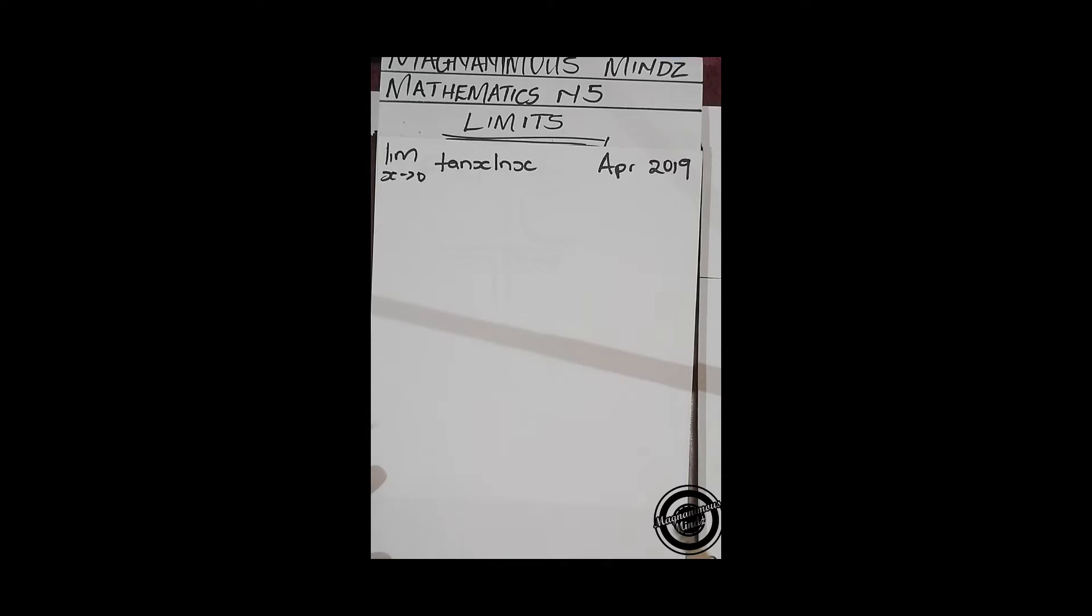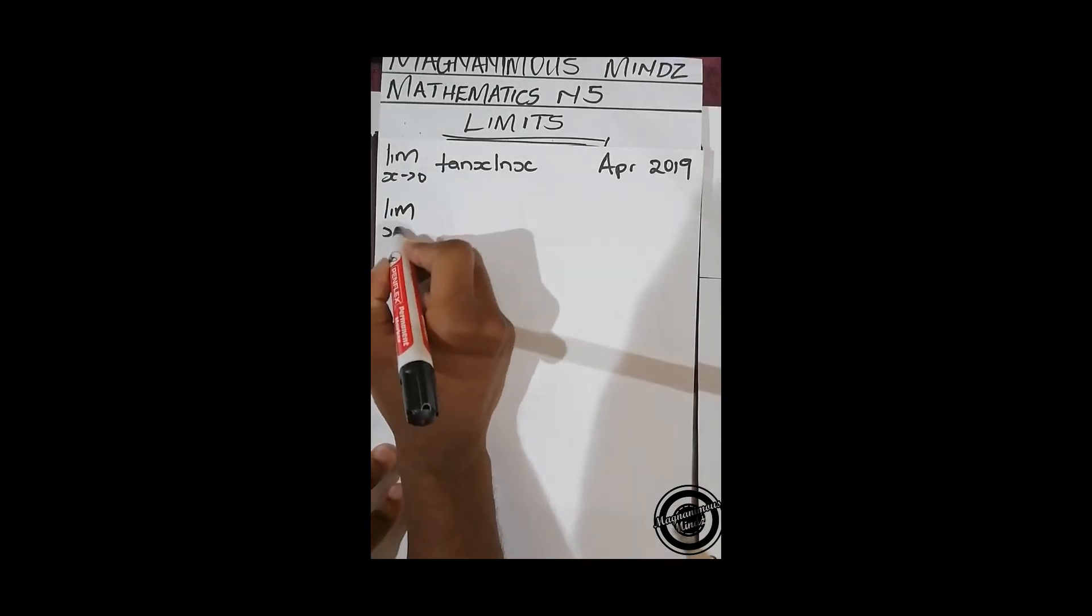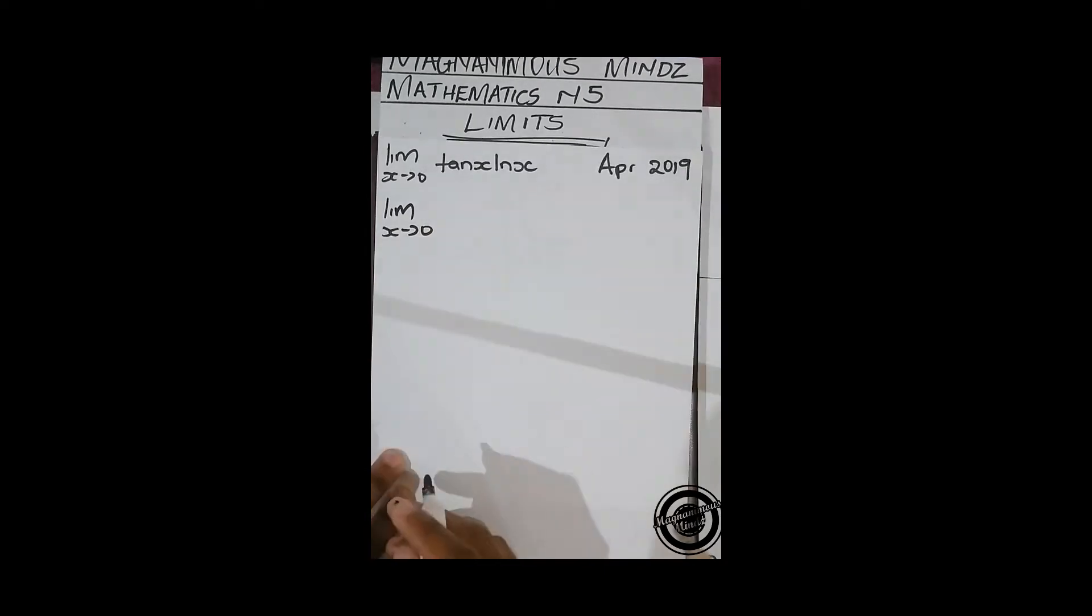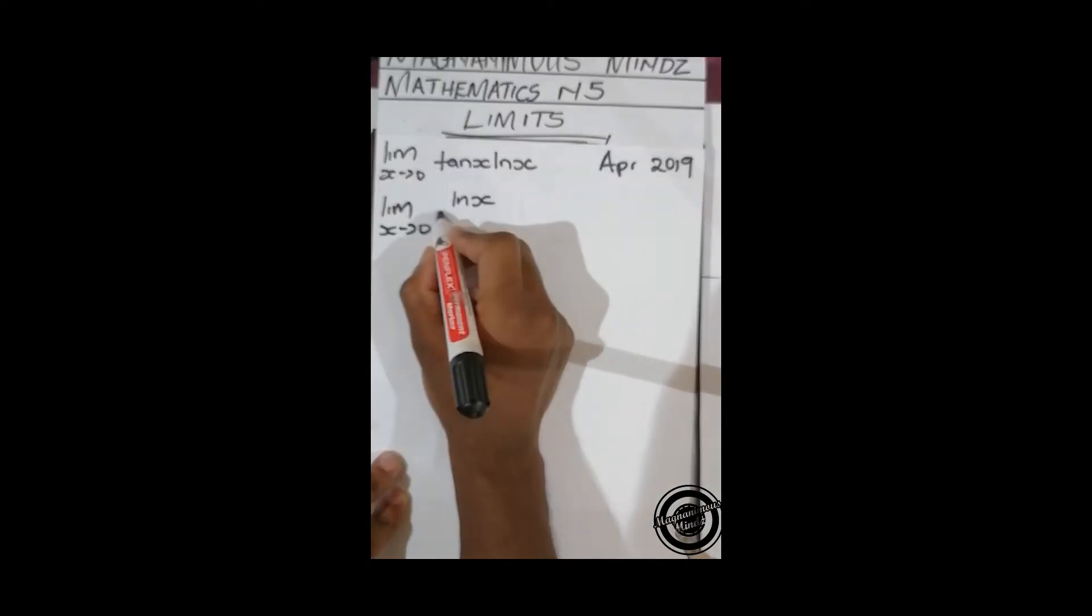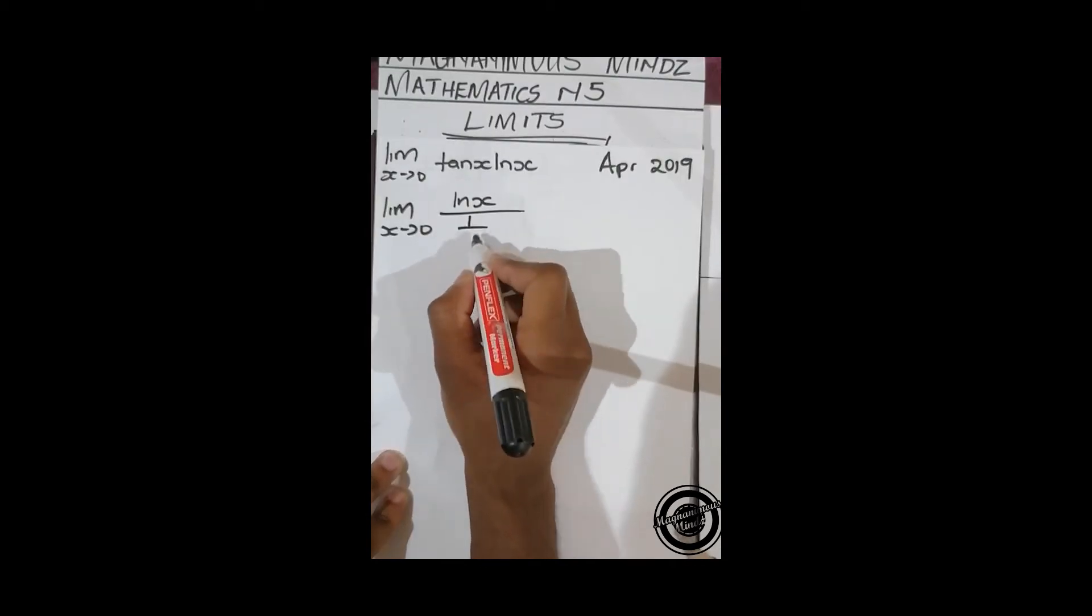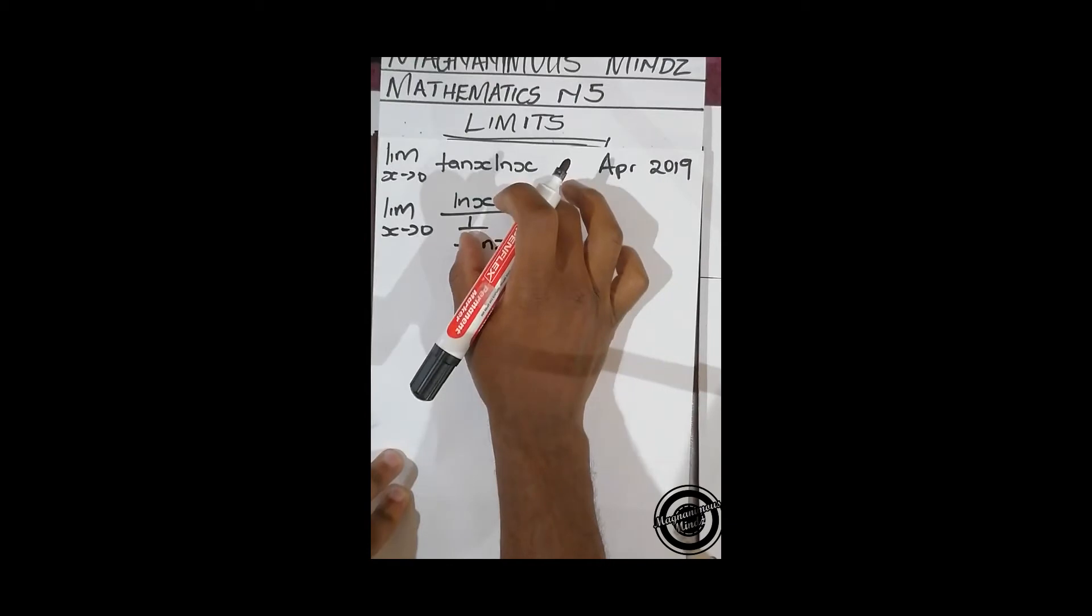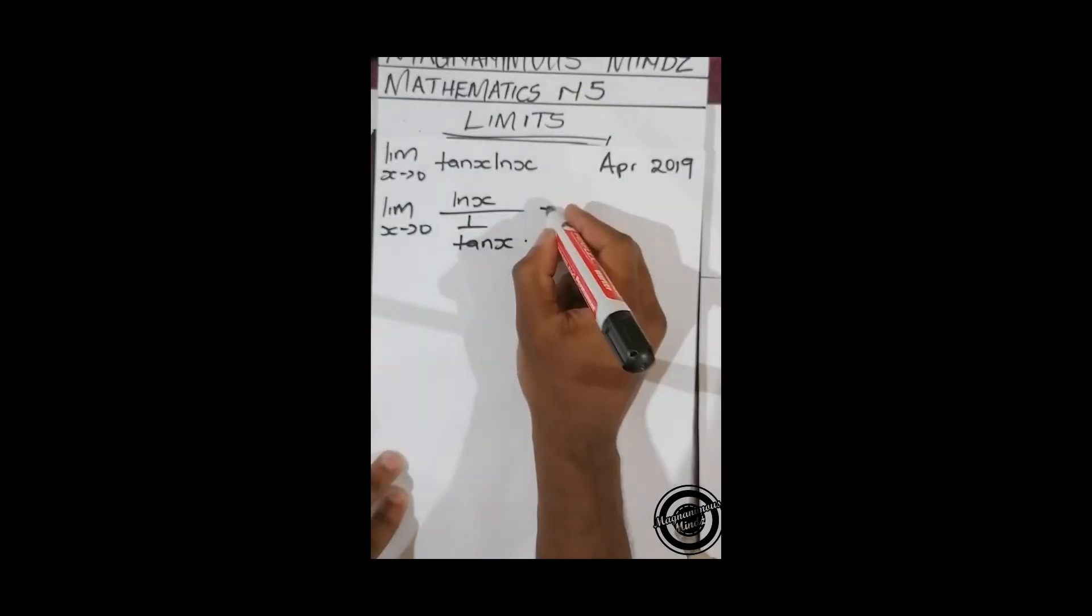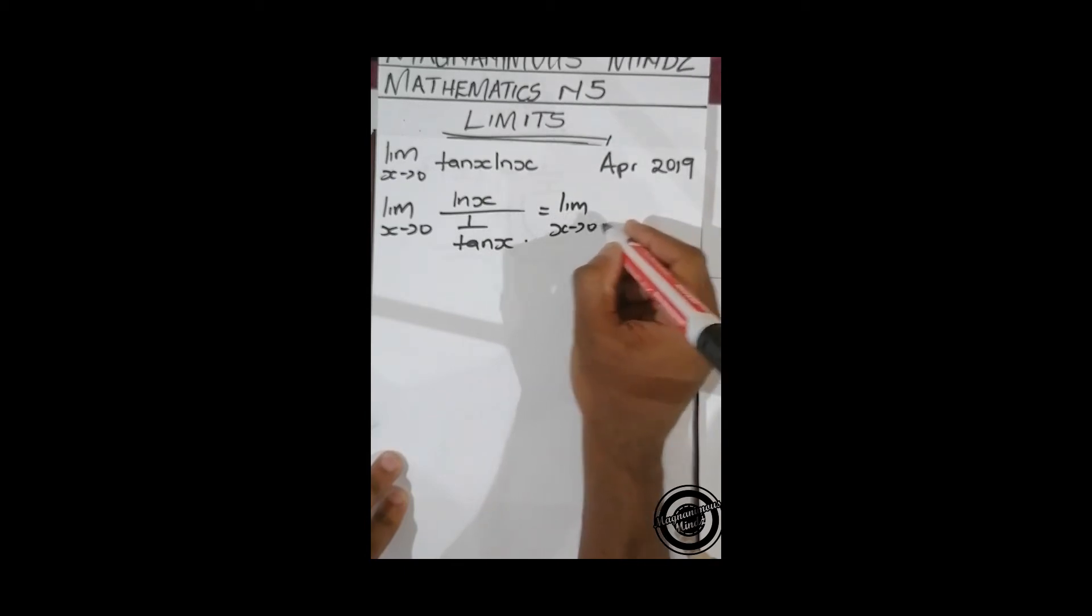So let's try to do that. We need to see lim x approaching zero ln x, and we write tan as 1 over tan x. If you try to simplify this, it's going to come back to this. And this is lim x approaching zero...